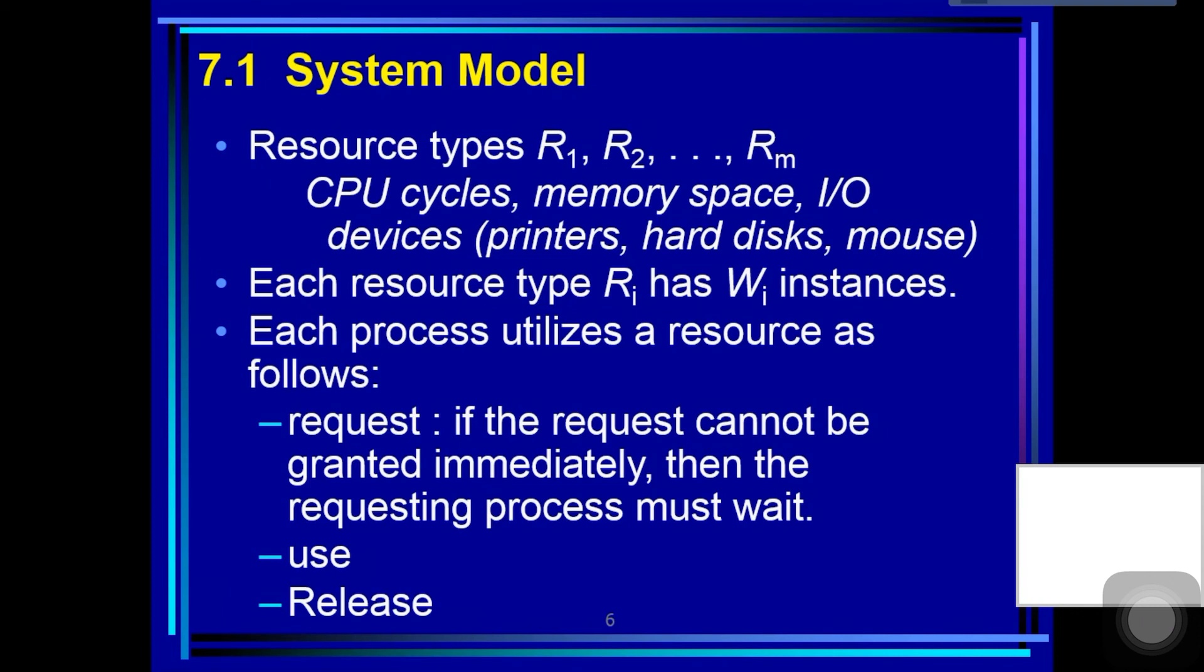A process may request as many resources as it requires to carry out its designated task. Obviously, the number of resources requested may not exceed the total available in the system. In other words, a process cannot request three printers if the system has only two.